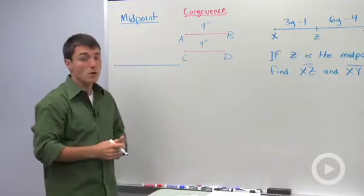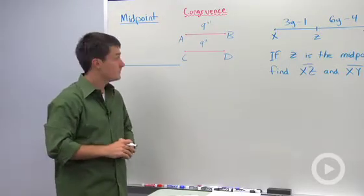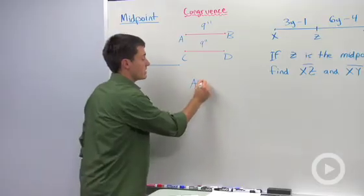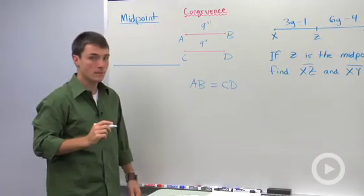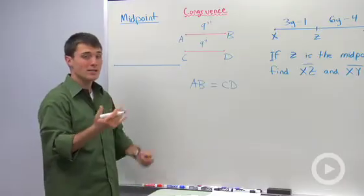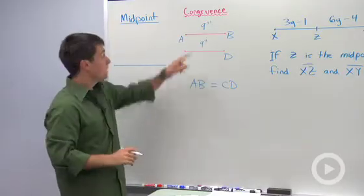Now, if I was going back to algebra, we love using equal signs in algebra. So I would say that AB is equal to CD. But now that we're in geometry, we're going to be using a different term, and that different term is congruence.